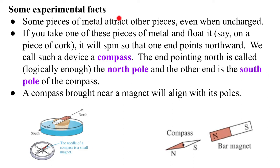Some pieces of metal attract other pieces of metal, even when they're uncharged. If you take one of those pieces of metal and float it on, say, a piece of cork, it'll spin so that one end points northward always. We call such a device a compass.